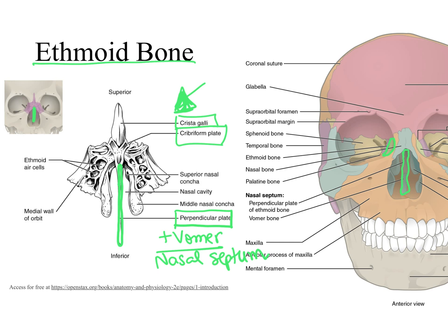Besides forming the upper portion of the nasal septum, the ethmoid bone makes up the upper nasal cavity walls. The ethmoid bone extends to the sides and forms the lateral walls of our nasal cavity, and extending from each lateral wall we have the superior nasal concha and the middle nasal concha.